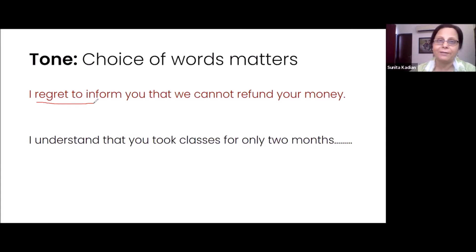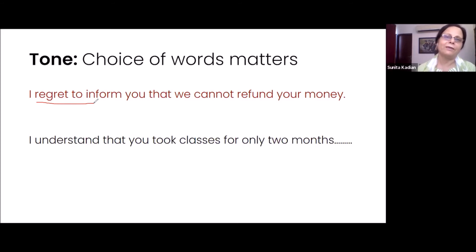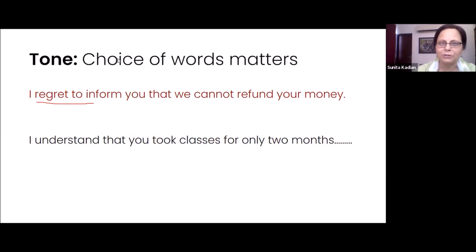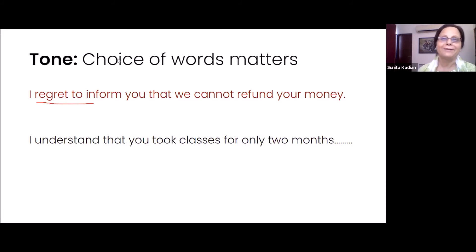The person is angry that money is not being refunded because they didn't attend the classes. And then we send an email saying, 'I regret to inform you that we cannot refund your money.' First of all, we need to understand what the other person is feeling. It's important that the email states the reason why we cannot refund. The compassion comes when you become empathetic — you understand the situation of the other person. 'I understand that you've been troubled because of this. However...' — and then you move on. But first, you understand.